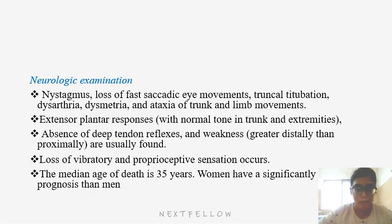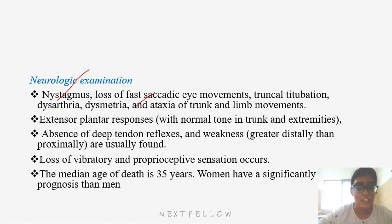On neurological examination, there is nystagmus and loss of fast saccadic eye movements. Saccades are the fast eye movements — for example, when something suddenly catches your attention and your eyes rapidly move toward it. There is loss of that fast movement in Friedreich's ataxia.